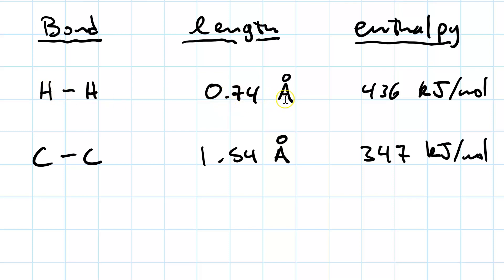So you've got a 0.74 angstrom bond length, and hence a very strong bond. Shorter bonds are stronger, at 436 kJ per mole.